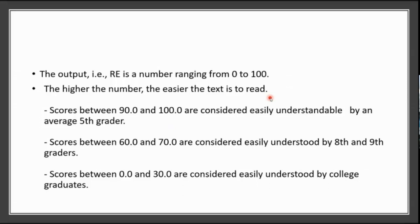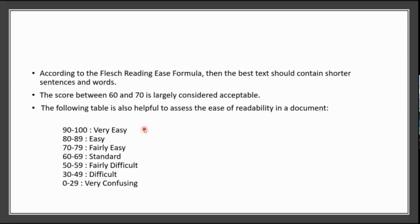When the score is between 90 to 100, it is considered easily understandable by an average fifth grader — a class 5 student can easily understand with no problem. Score 60 to 70 is for 8th to 9th grade standard. Score 0 to 30 is considered easily understood by a college graduate. Another way to interpret: 90–100 is very easy, 80–89 easy, 70–79 fairly easy, 60–69 standard, 50–59 fairly difficult, and 0–40 is difficult.